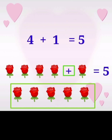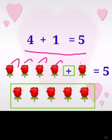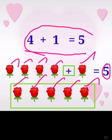4 plus 1 is equal to 5. Here 4 rose flowers are given. Plus adding 1 — 1, 2, 3, 4. Adding 1 more. Totally how many rose flowers? 1, 2, 3, 4, 5. Totally how many? 5. Answer is 5. 4 plus 1 is equal to 5.